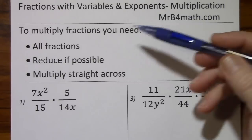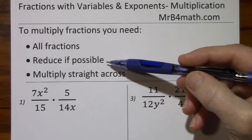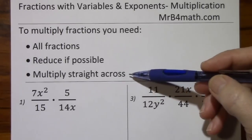To multiply fractions, you need all fractions, then you want to reduce if possible, and then you multiply straight across.